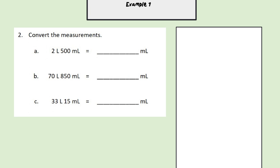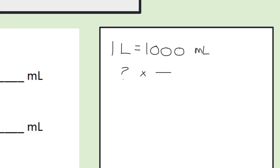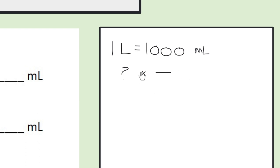Now that we went over our vocab, we're ready to move into example one. Before we start, we need to remember that one liter is equal to 1000 milliliters. I listed that here for reference so we don't have to keep checking, as well as the conversion system we will be using today. We will put the unit we start with here — in this case liters — multiplying by the conversion needed: one liter equals 1000 milliliters. Since we are going to a smaller unit, we will be multiplying. When we go to a bigger unit, we divide. Multiplying goes on the top, and dividing goes on the bottom.